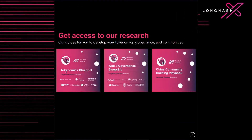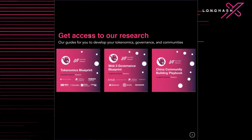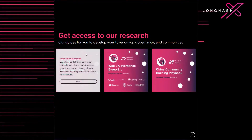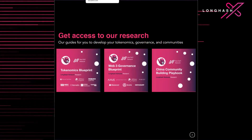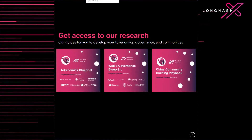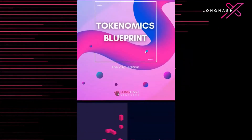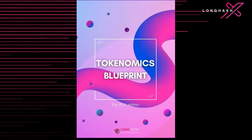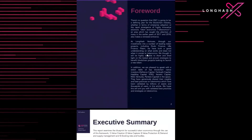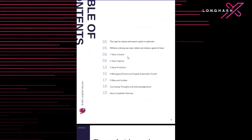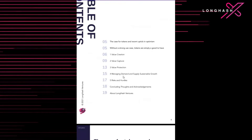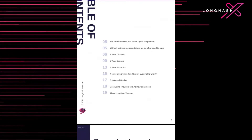You can find the Tokenomics Blueprint Edition 2021 there. It was released earlier this year — we've been working on it since last year, and within six months we already need to refresh it. Today's session will bring in some fresh examples based on recent developments in Tokenomics. We'll walk through the major sections: why tokens, value creation, value capture, value protection, supply and demand, and then recent hurdles before moving to questions.